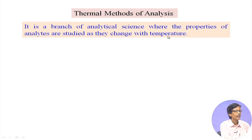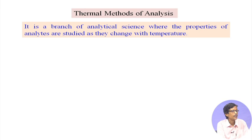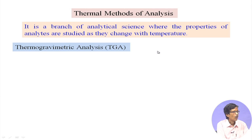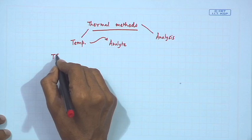If we find that some property changes with regard to temperature — for example, a certain material is stable up to 100°C but changes above 100°C — then the reaction happening at that particular temperature, or the transformation product, can be seen from this sort of analysis. One such example is thermogravimetric analysis, abbreviated as TGA.